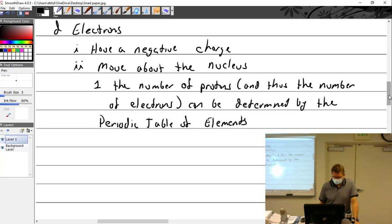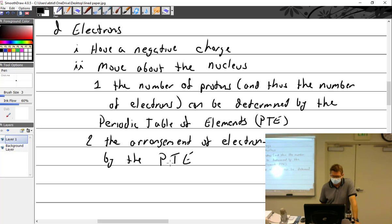Let's see. The arrangement. The arrangement of electrons can also be determined by the periodic table of elements. PTE.